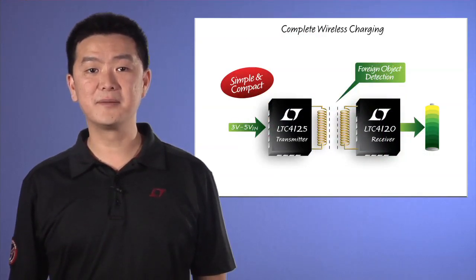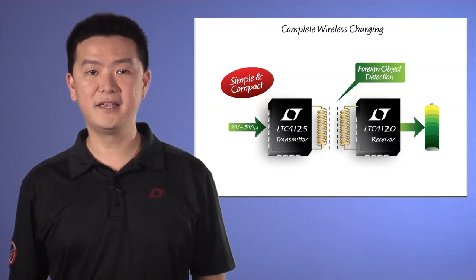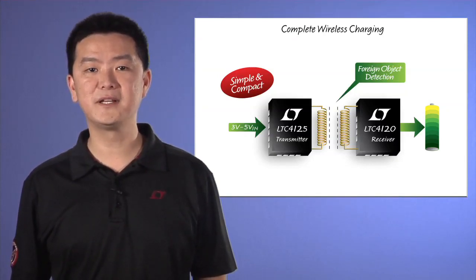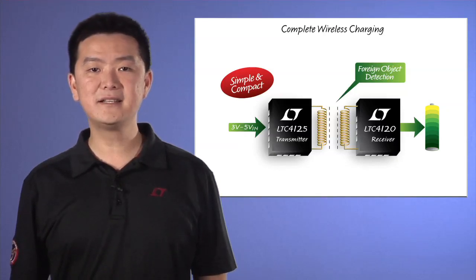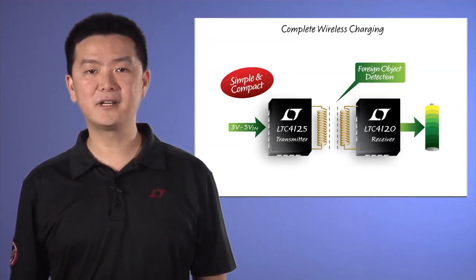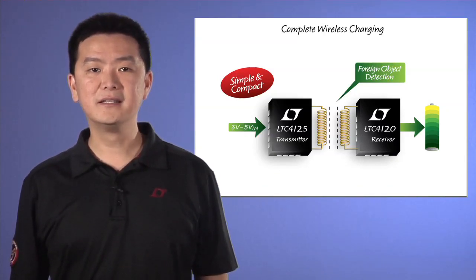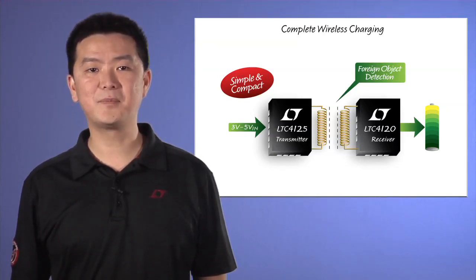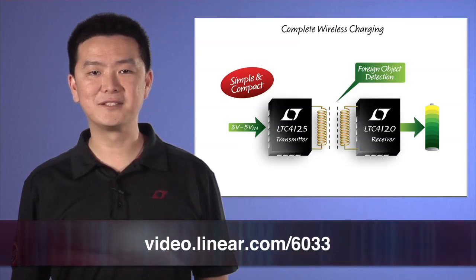The LTC4125 is a powerful new IC that provides everything required to make a safe, simple, and highly efficient wireless power transmitter. The auto-resonant technology, the optimum power search, and the conductive foreign object detection via frequency shift ease the design of a full-featured wireless power transmitter with excellent distance and alignment tolerance. The LTC4125 is a simple and exceptional choice in a robust wireless power transmitter design. Please visit Linear.com for more information. Thank you.